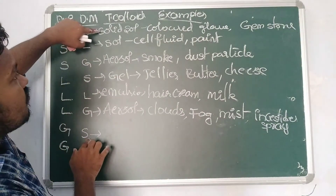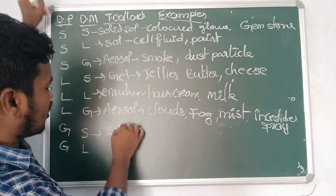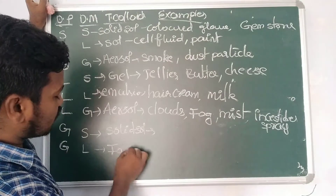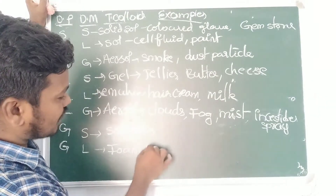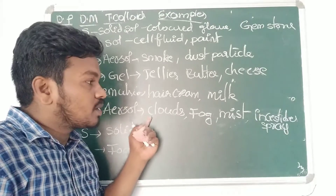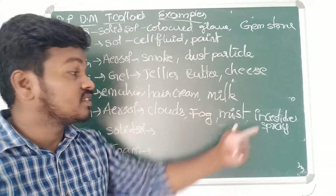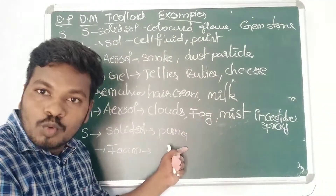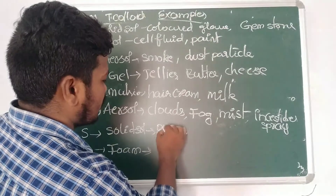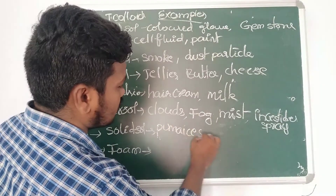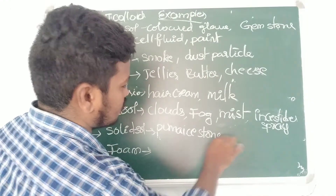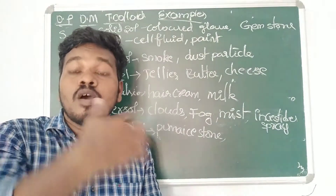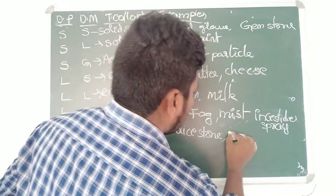Someone beside the passenger asks what company of insecticide spray he is using. He said it is a Puma company — so write it as pumice stone. Whatever the insect was, he rubbed it, and automatically foam came outside. So foam rubber — that is called foam rubber.